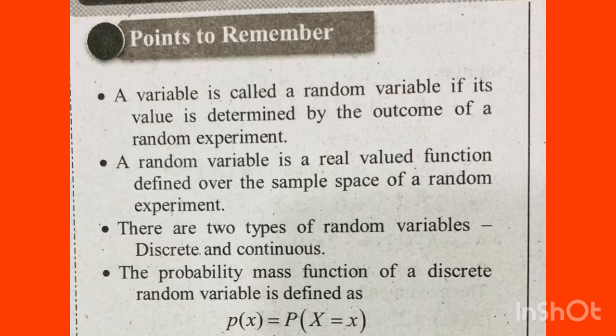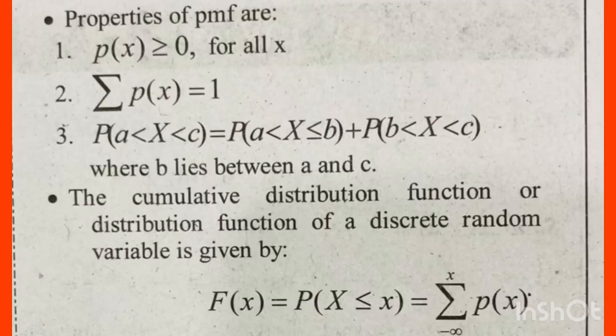There are two types of random variables: discrete random variable and continuous random variable. The probability mass function of a discrete random variable is defined as P of X is equal to P of X equal to x. This is called the PMF.